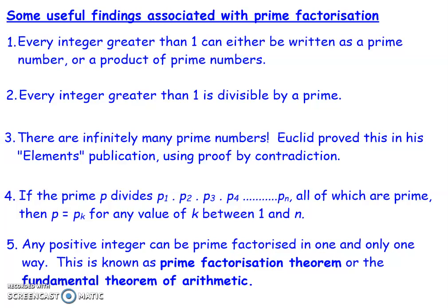Third, there are infinitely many prime numbers. You don't have to remember them all, but there are infinitely many. Euclid proved this in his Elements publication using proof by contradiction — look that up if you're interested. Fourth, if we have a prime number p, and it divides a number which is given by a product of prime numbers p1, p2, p3 up to pn, then p must equal one of those prime numbers, let's call it pk, for some k between 1 and n. So if I can divide a number by a prime number and it's already decomposed into a product of primes, that prime has to be one of those primes.